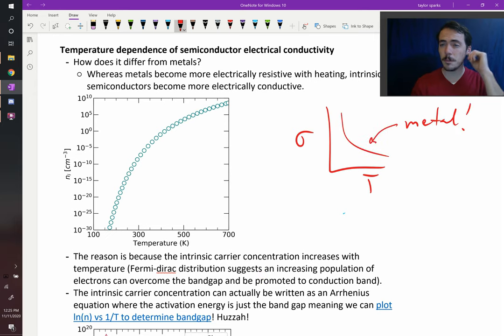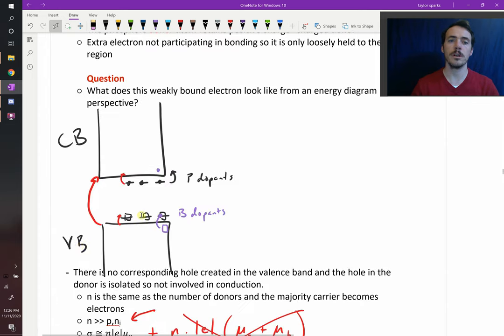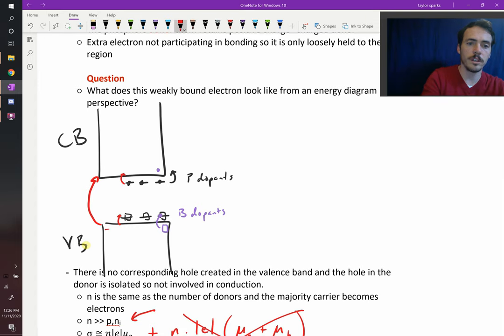But for a semiconductor, you see the exact opposite behavior. The reason is because your number of intrinsic carriers really takes off as you heat things up. You've got all these carriers and you want to get them promoted across the band gap. That takes a lot of thermal energy. So the more thermal energy you give it, the more of those can jump across the gap.